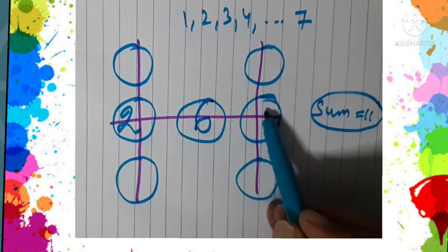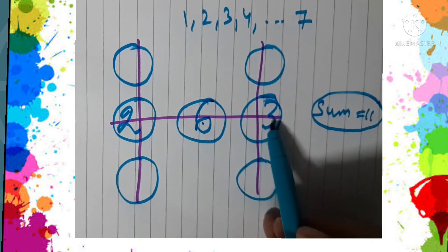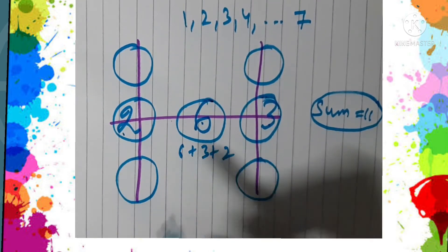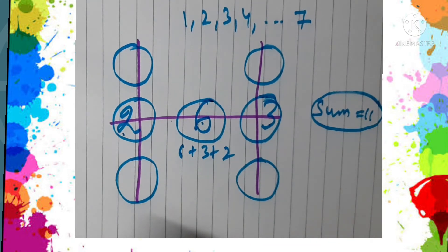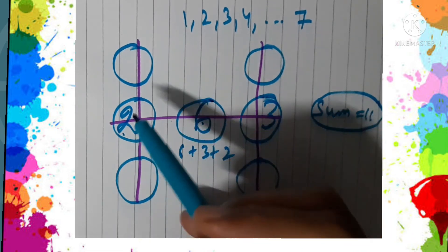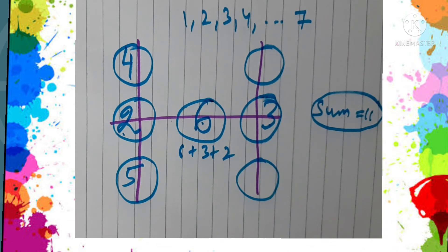And 2 here and 3 here. So what do we get? 6 plus 3 plus 2, that is 11. Now see the first vertical line. Here I'm placing 4 and the digit 5 at the bottom. So 5 plus 2 plus 4, that is 11.